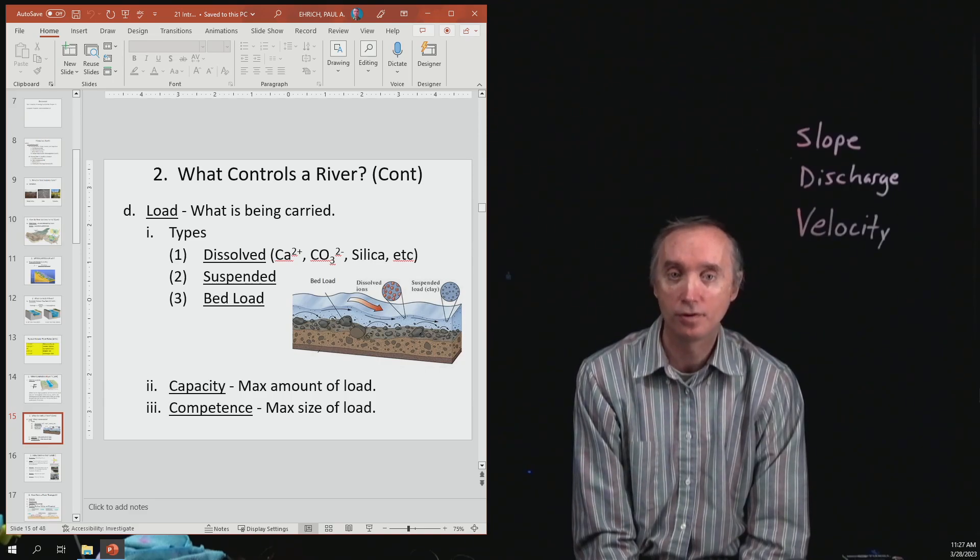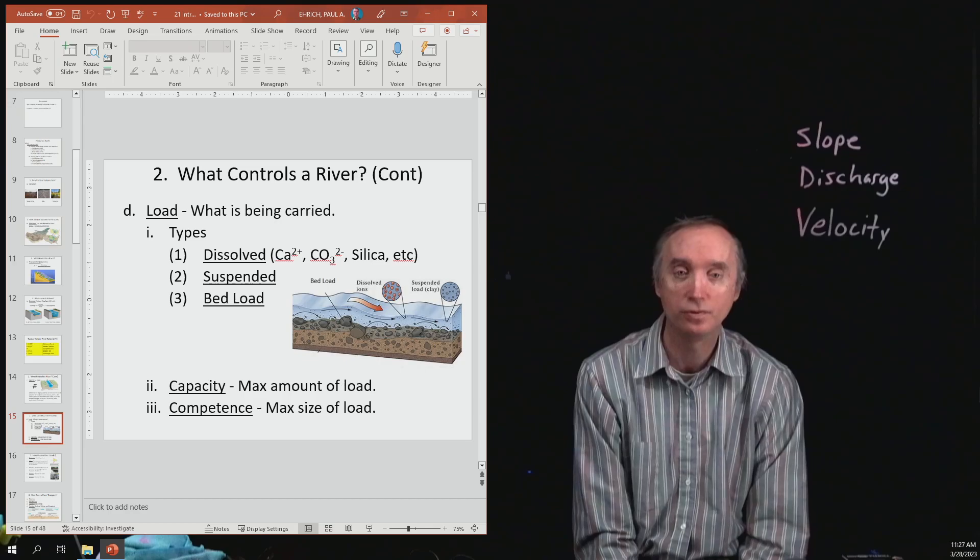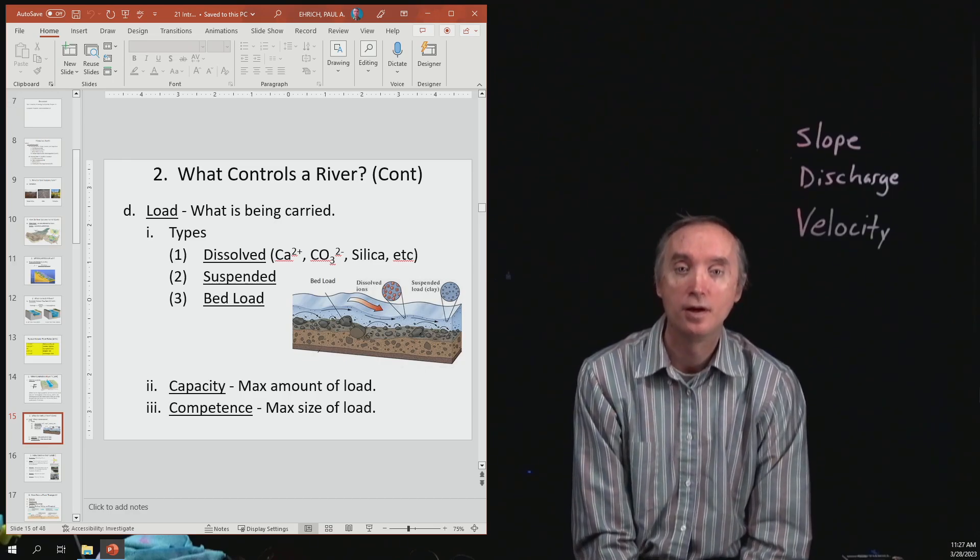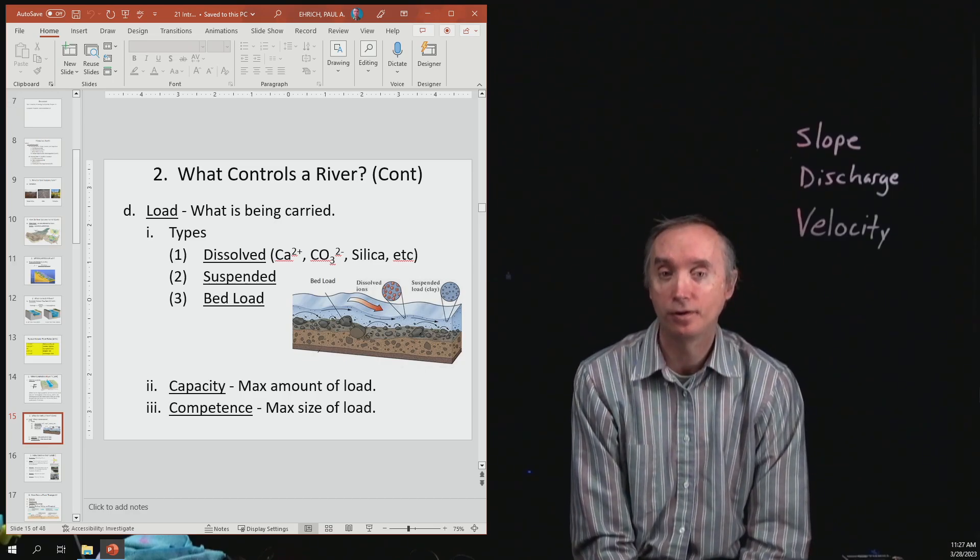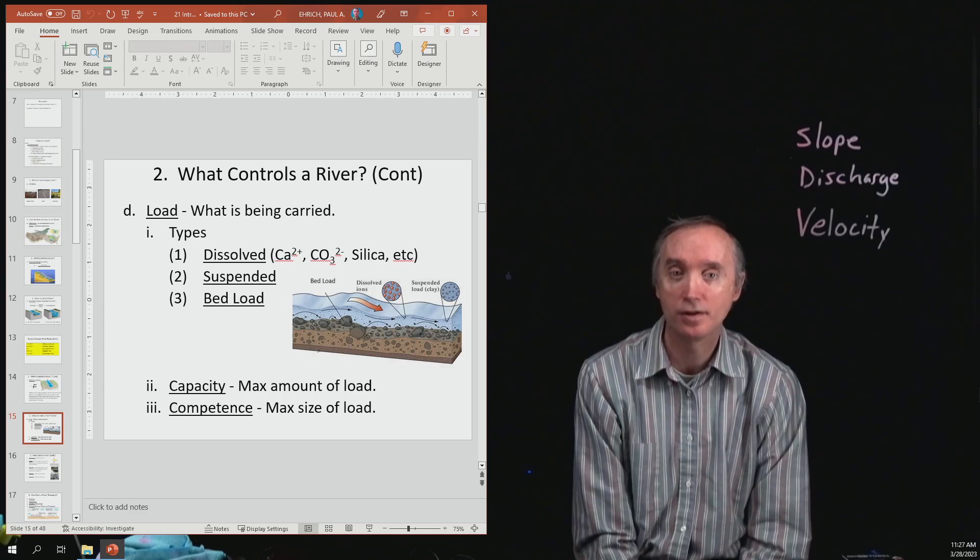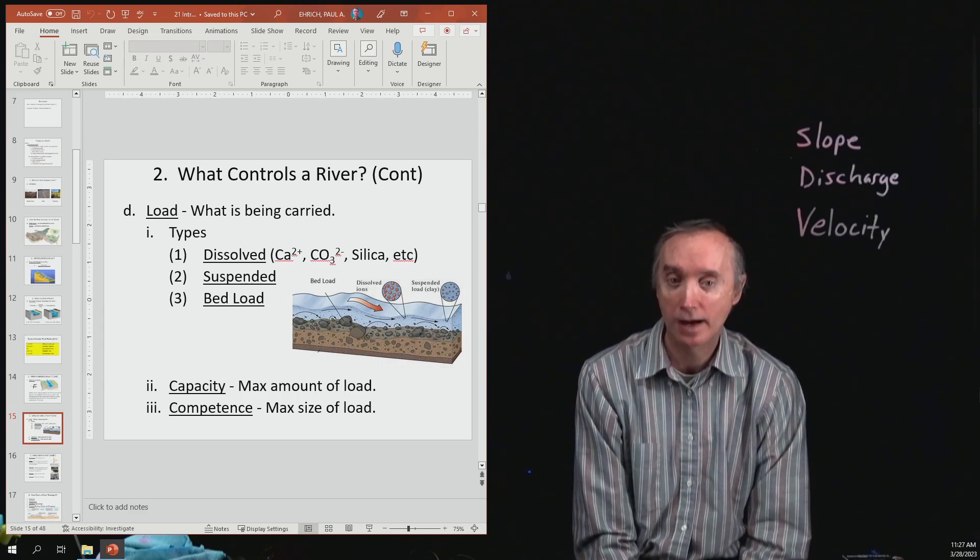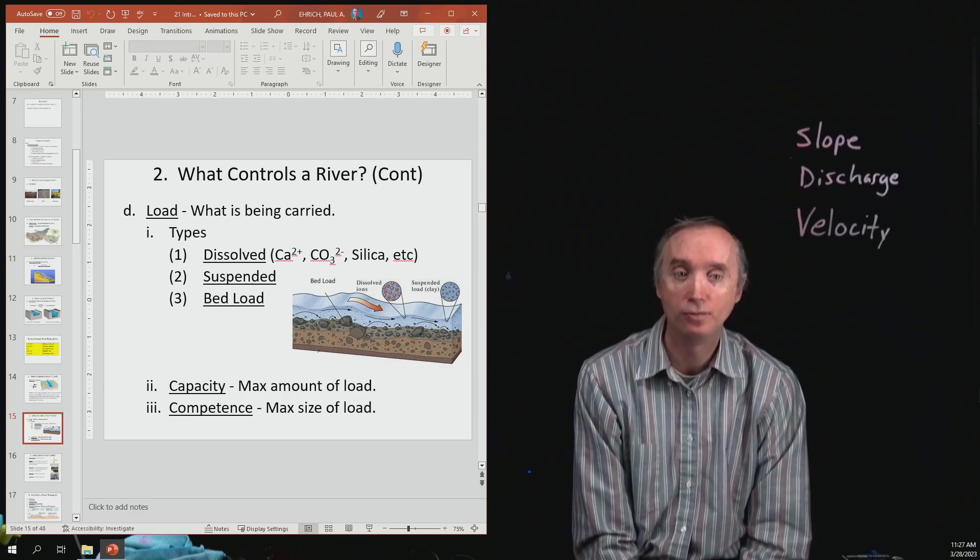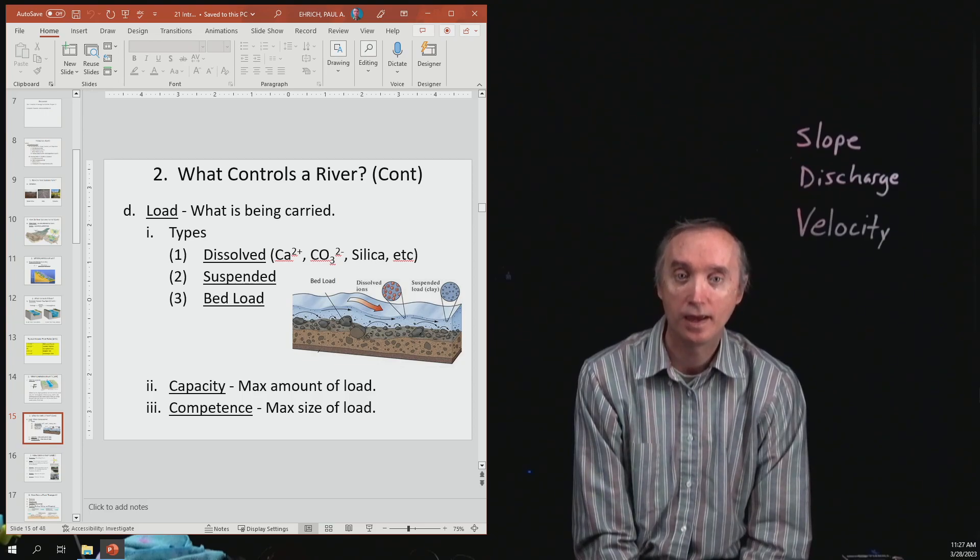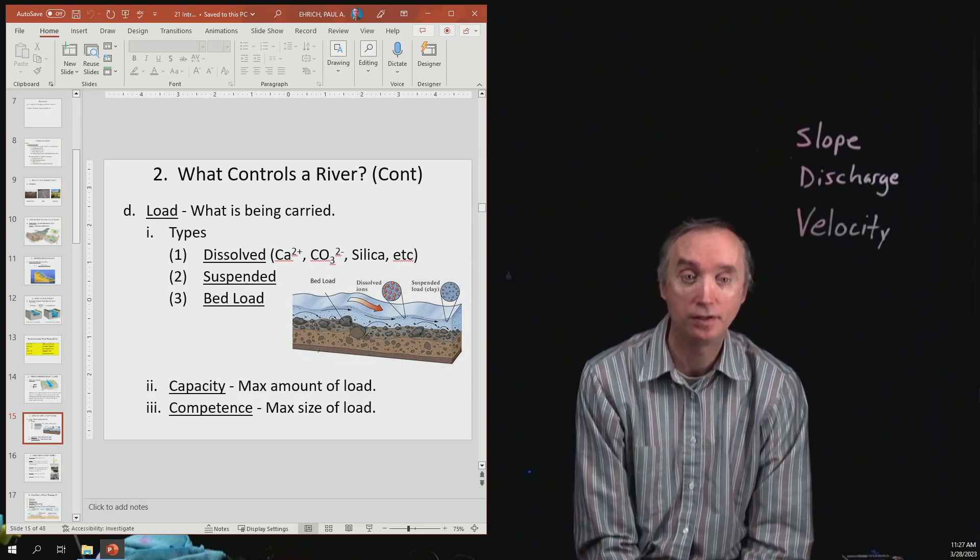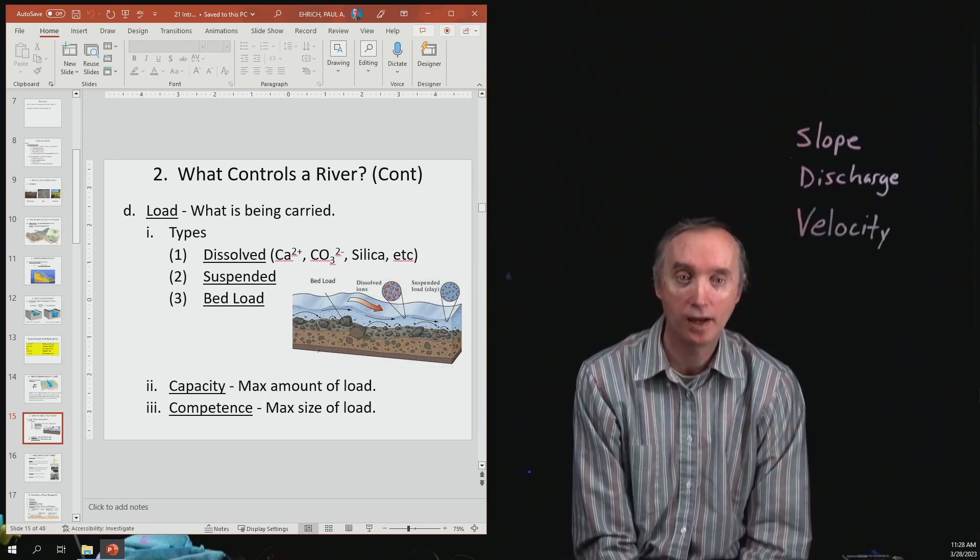Both of those things are going to be dissolved and go into the water. Now we're going to find out later that sometimes this calcium and carbonate can go back together again to make calcite, and it's going to make the rock travertine which we're going to find in caves.